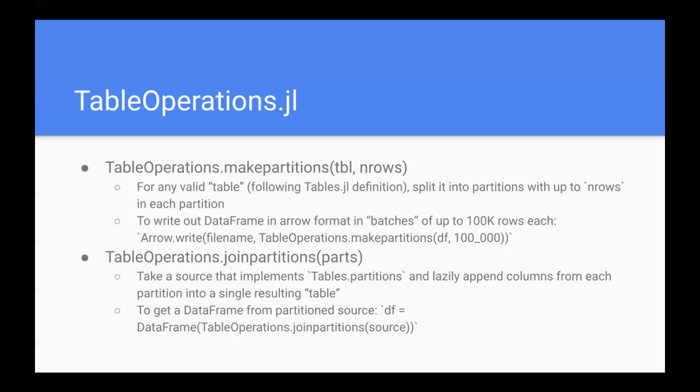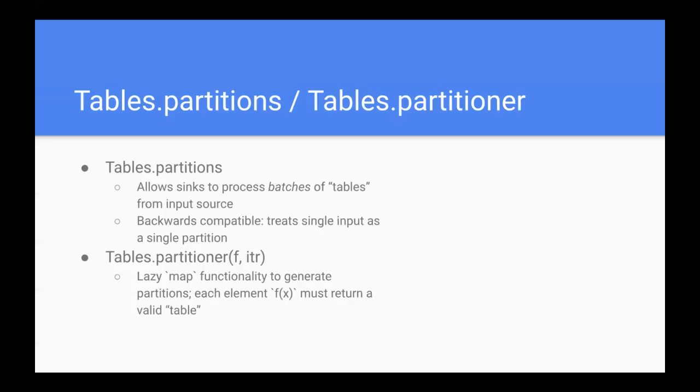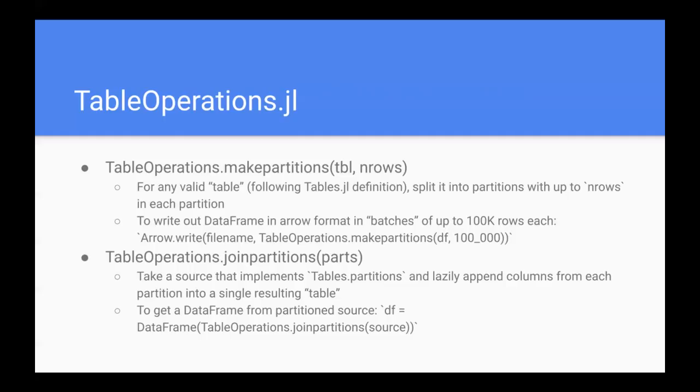So an example here might be if you have a partitioned input data source, it's kind of a collection of CSV files or something like that, and oh I actually want to pass that to a data frame and just kind of treat them all as one long, one big data frame and do data frame operations on those. So I could call join_partitions on the source, which, going back to this slide, might be a tables.partitioner where I've kind of generated those partitions using CSV.file on a directory of CSV files. So those are two convenience functions that are introduced that hopefully make working with partitions a little easier.